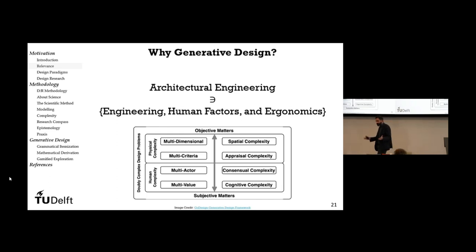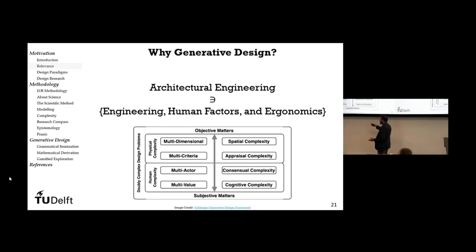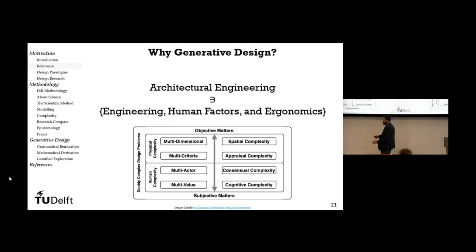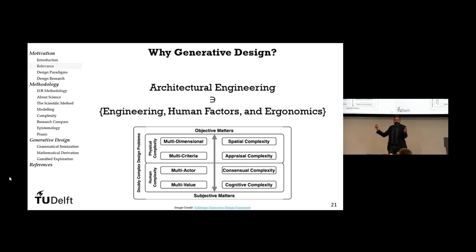Architecture and engineering is not exactly like a pure engineering field. There are human factors and ergonomics involved, as well as subjective matters — people want to identify themselves with their homes and have the possibility to customize their buildings. But we also have very objective matters. The whole physical complexity of design comes from spatial complexity: the space we work with is far from a plain Euclidean space. You have to go through a network, which is a rather complex structure.